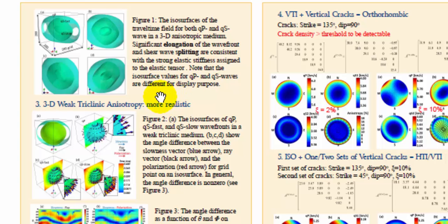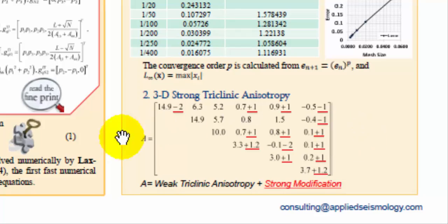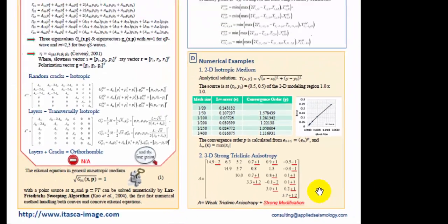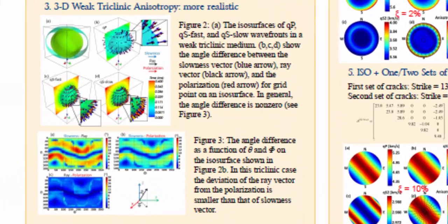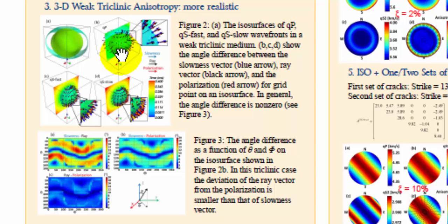Now we have this travel time field, and at any point within the model we can calculate the slowness vector, the ray vector, as well as the polarization. To be realistic, we repeat this on a weak triclinic model. The elastic tensor now looks like this — without the strong perturbation — so this media is more close to the reservoirs we are interested in. It is still anisotropic but weak triclinic. After the calculation, we can see the P wave isosurface is elongated but shear wave splitting is not as obvious. On this isosurface, we calculated the polarization, slowness vector, and ray vector for P wave and for shear wave. In general for P wave, the slowness, ray vector, and polarization are three different vectors — this is predicted by theory and now reproduced by this technique.